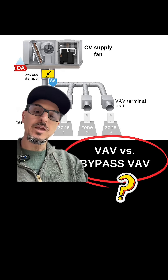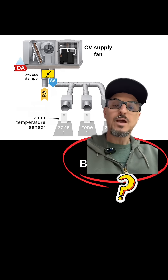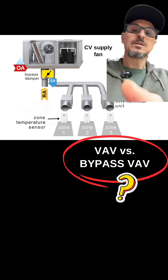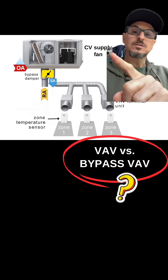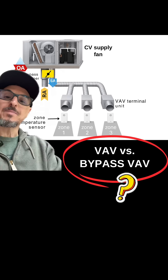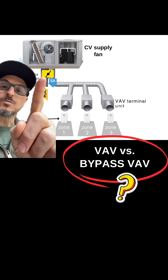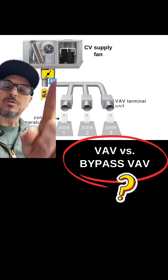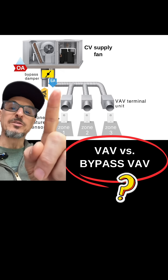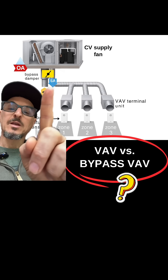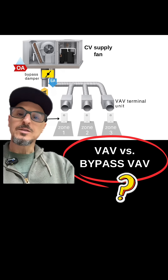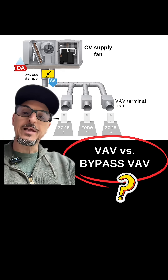What happens is, as these dampers close, you have to have somewhere for the air to go. In a bypass VAV system, your supply fan is actually constant volume — it never slows down. You have a bypass damper between the return duct and the supply duct. So as these boxes close, the pressure builds up, and the bypass damper opens, allowing some of the air to bypass from the supply to the return.